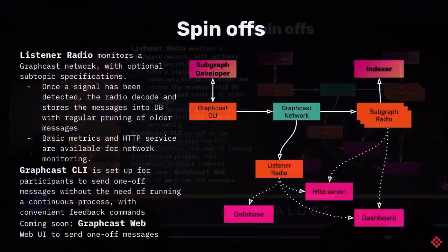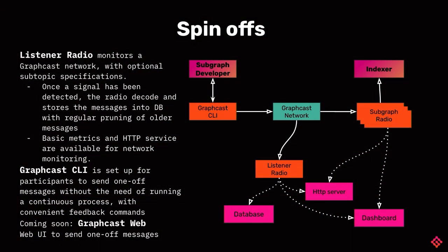There are also a few tools that grew around GraphCast. The listener radio is very similar to subgraph radio — it listens to all messages on the same relay network but never sends messages to other radios. This allows a person to closely observe what's going on in GraphCast without interfering with it. If there is any weirdness going on in the network, it will expose that quickly. Similarly, it also has databases, an HTTP server, and a dashboard.